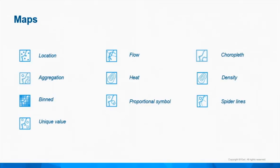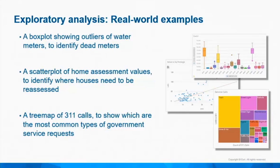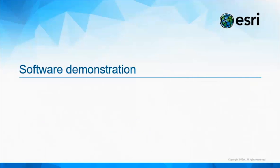Similar to charts, when you drag data onto a map, Insights chooses intelligent defaults for the mapping technique. And of course, if you want to change the symbology and overwrite the default, you have control to do that. Some real-world examples: you could create a box plot showing outliers of water meters to identify dead water meters — where are the leaks, where are they broken? A scatter plot of home assessment values to identify where houses need to be reassessed. Or a tree map of 311 calls to show the most common types of government service requests.